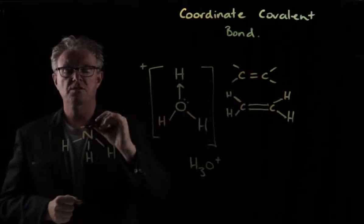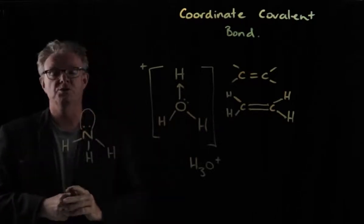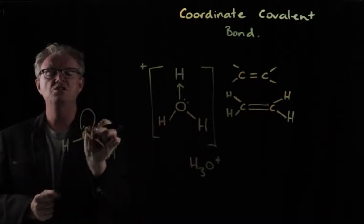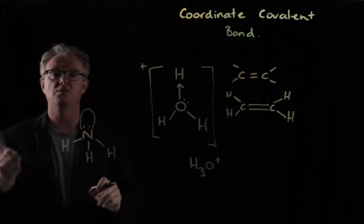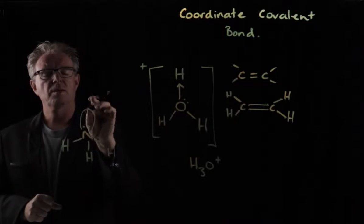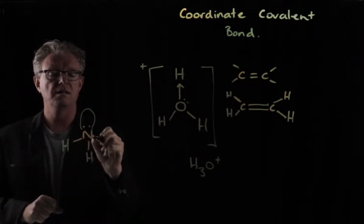And so in terms of electron configuration, or electron distribution, I should say, this ammonia molecule, the regions of electron density, according to the valence shell electron pair repulsion theory, it's a pyramid structure. It's got three down here and one at the top.